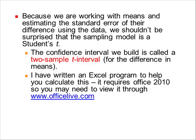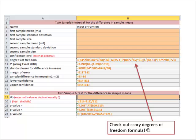But because we are working with means and estimating the standard error of their differences using the data, we shouldn't be surprised that the sampling model is Student's t, and the confidence rule we build is called a two-sample t interval for the difference. I've written a program to help you calculate this, and it requires Office 2010, so if you don't have it, you might need to view it through Office Live. Here's my formula. Here's what it looks like.